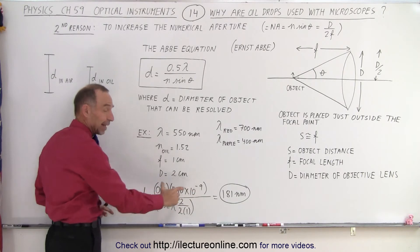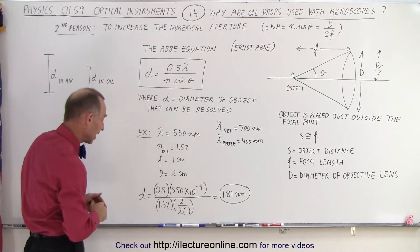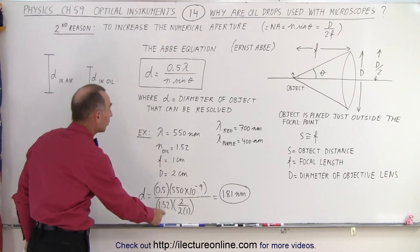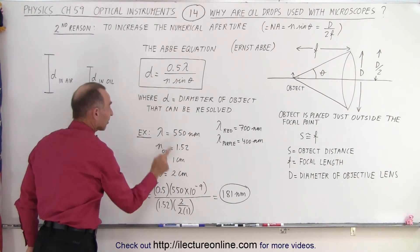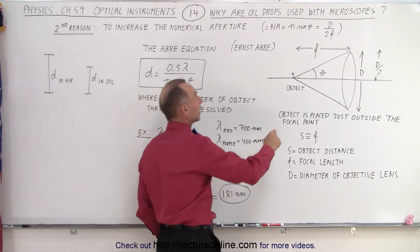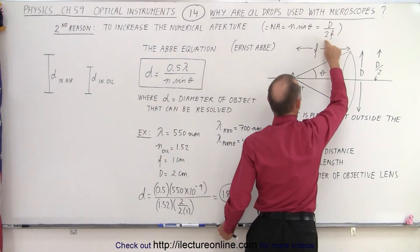0.5 times the wavelength of light, the average wavelength, 550 nanometers, divided by 1.52 for the index of refraction of the immersion oil, and the sine of theta can be replaced by the diameter of the lens divided by twice the focal length.